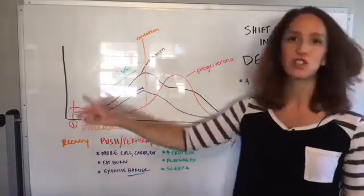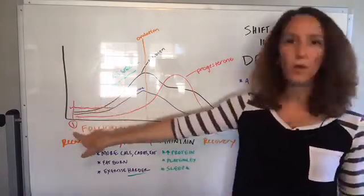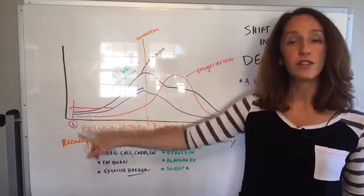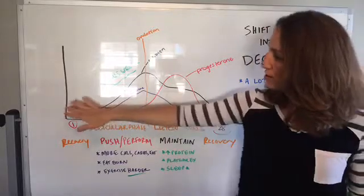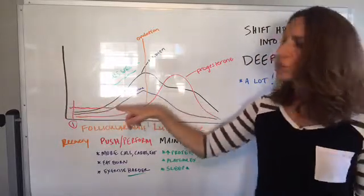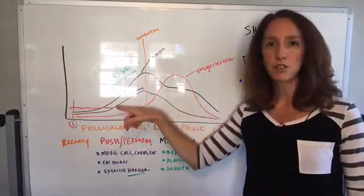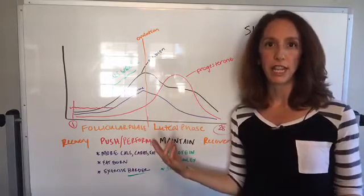Let's start at the beginning. Day one of the menstrual cycle is the first day of bleeding, the first day of your period. I noted with this little red squiggly line here, those are the first few days of your menstrual cycle where women will generally have their periods.